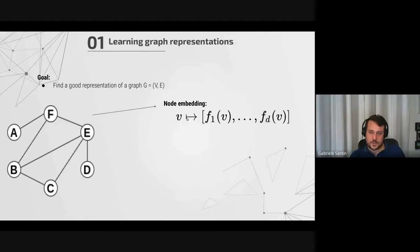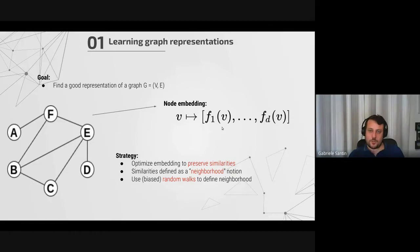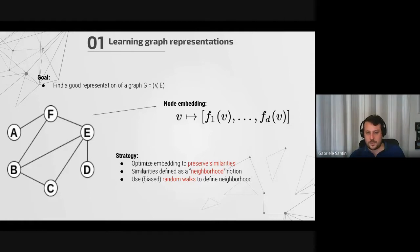To be practical, since we assign to every node one vector, finding that embedding is the same as finding a matrix where every row is the embedding of one node, and the number of rows equals the number of nodes. Node2Vec and DeepWalk use a clever strategy: they optimize this embedding in a way that preserves the similarities present within the graph.